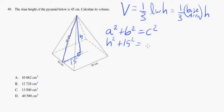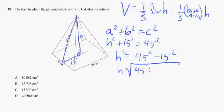So h² + 15² = 45². The height of my pyramid is then going to be 45² - 15². That's right, h². So h is going to be the square root of 45² - 15², which is equal to approximately 42.4264 centimeters.